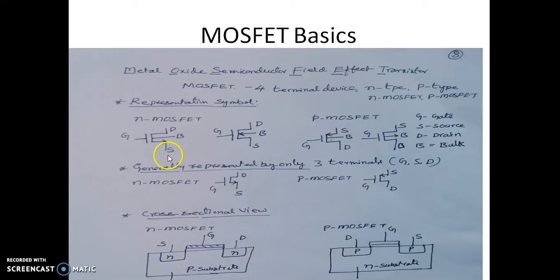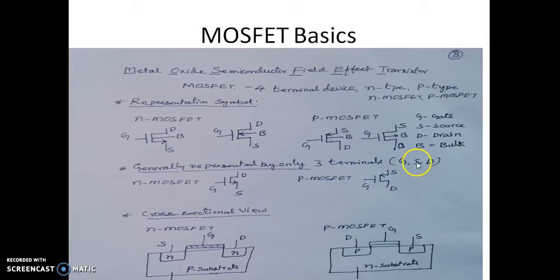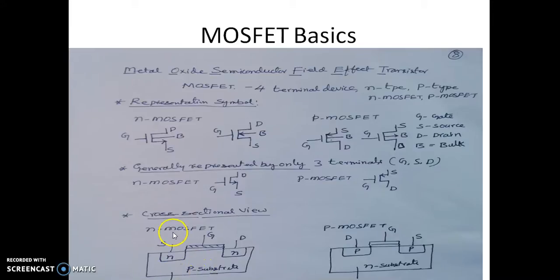For N-MOSFET the source is at lower potential, whereas for P-MOSFET it is always at higher potential. Generally a MOSFET is represented by only three terminals: gate, source, and drain. The fourth terminal, bulk, is not usually shown in textbooks, and it is assumed to be always connected with the source.